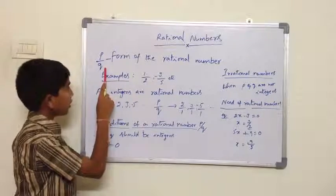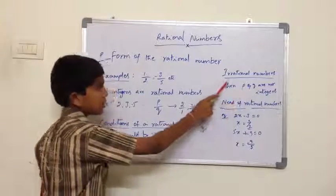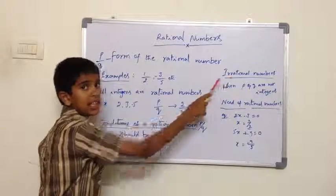When P and Q are not integers, they are called irrational numbers.